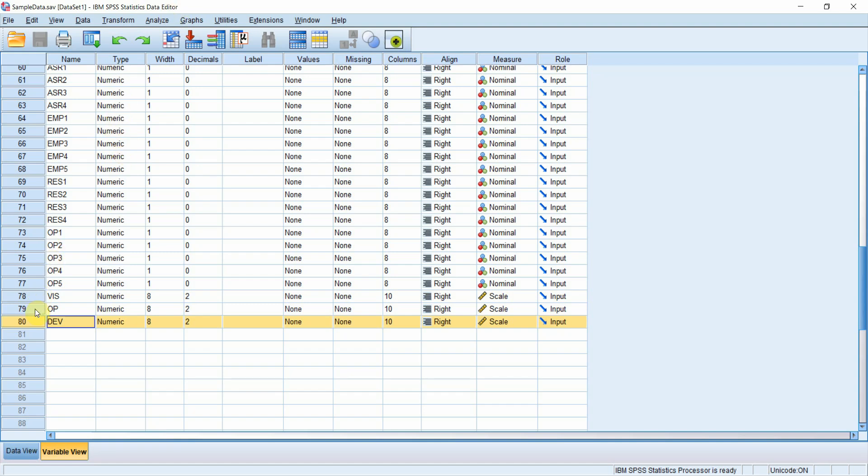I want to find out how much variance in organizational performance is being explained by these two variables, vision and development. All three are continuous variables.